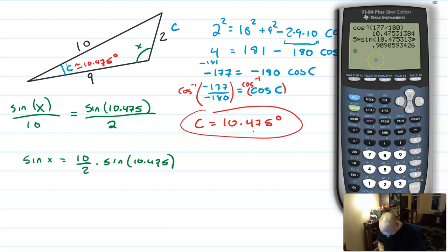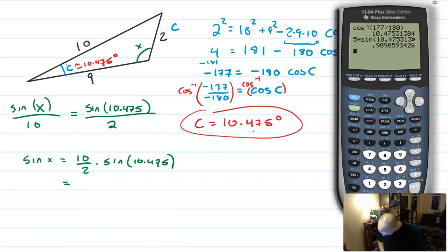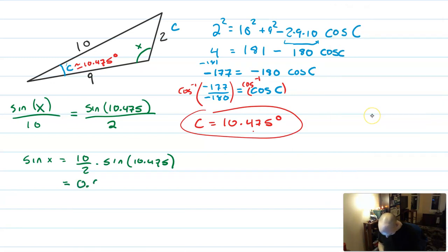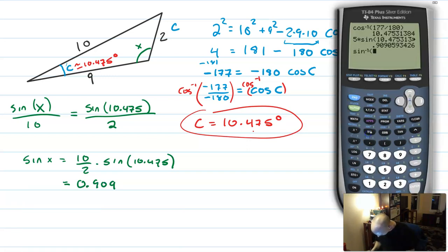So that is equal to 0.909, and then to find X, we have to use sine inverse. And so even with using the calculator to keep all the decimal digits of precision, I get that X is 65.3756 degrees.